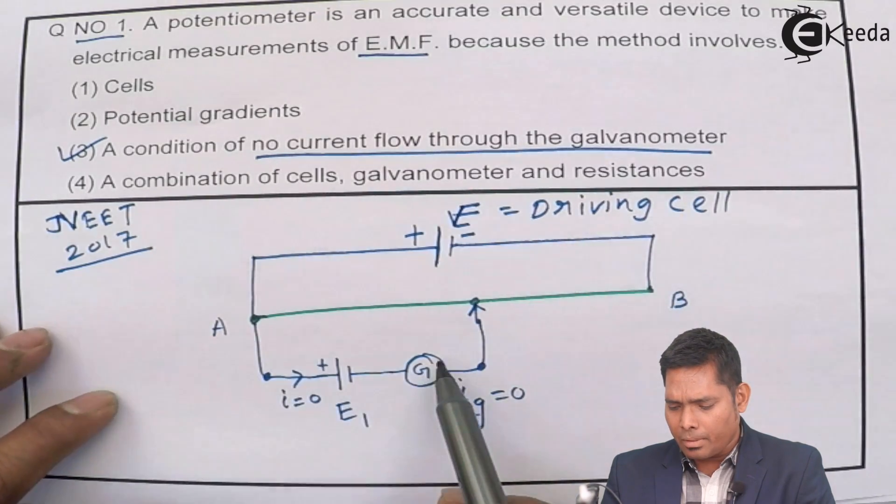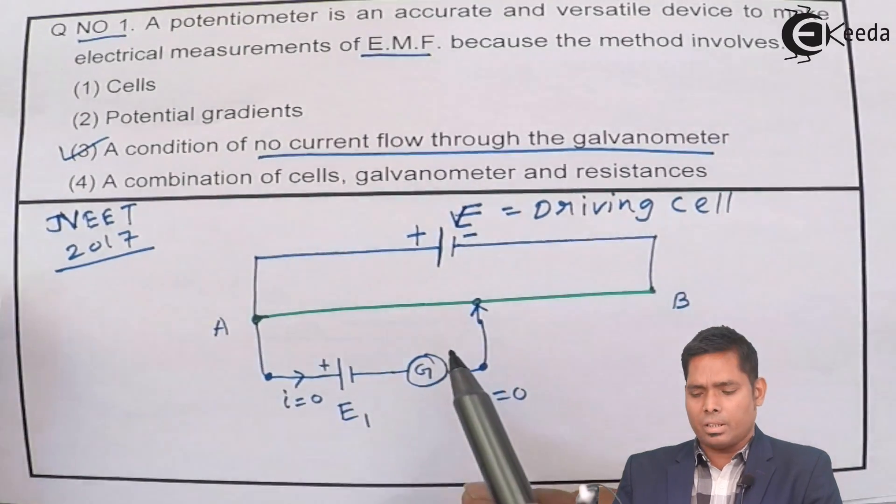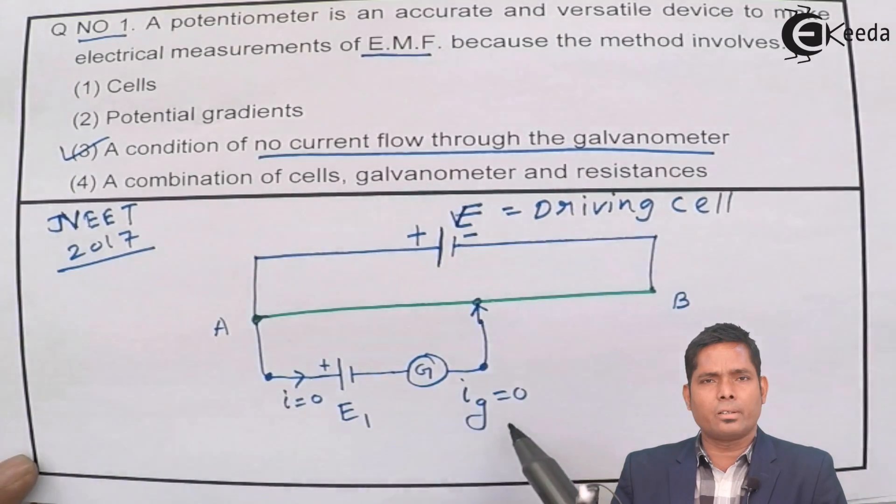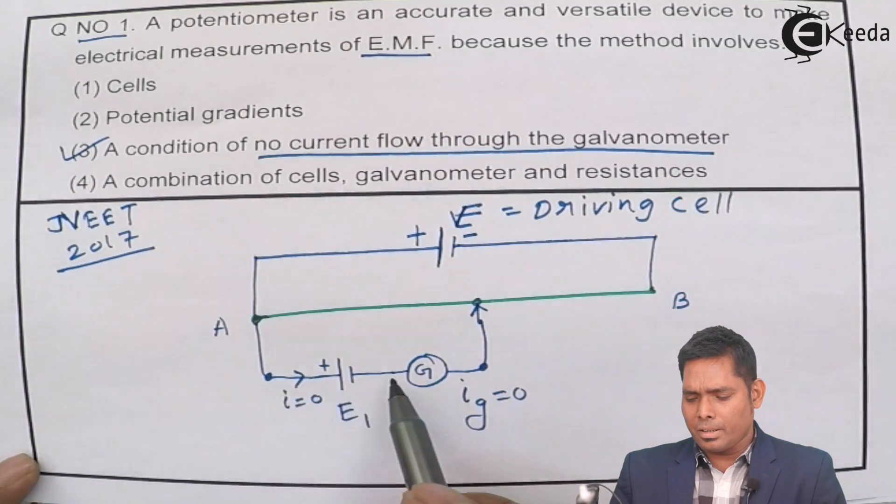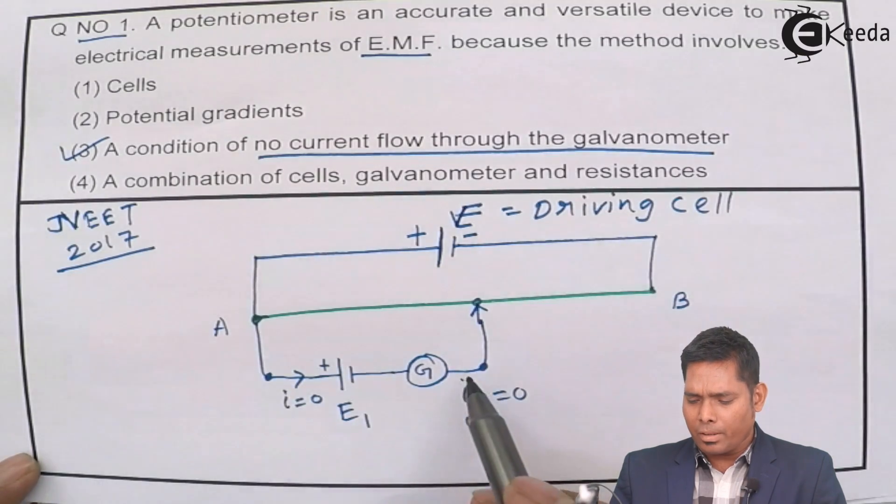If there is any current, the galvanometer will detect. Because the galvanometer is not showing any reading, that means there is no current present in this branch. When there is no current present in this branch,